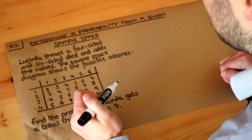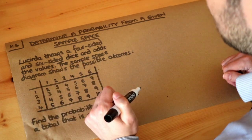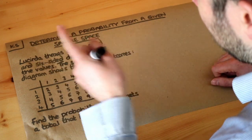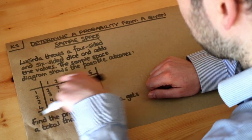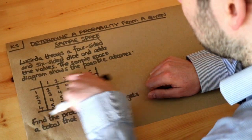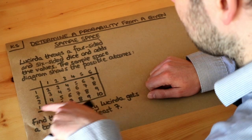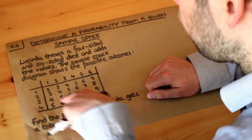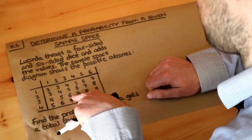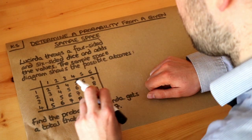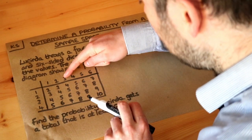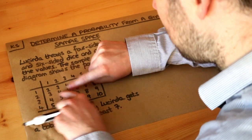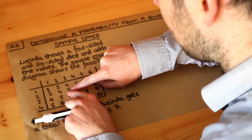A sample space diagram, as we saw in a previous video, shows us all the outcomes — either from one thing or from two different things that we're doing. In this case, these are the outcomes from the six-sided dice and these are the outcomes from the four-sided dice. It shows us all the combined outcomes because we're adding the values. For example, if we got a three on one dice and a two on the other dice, you can see we add them together to get five.